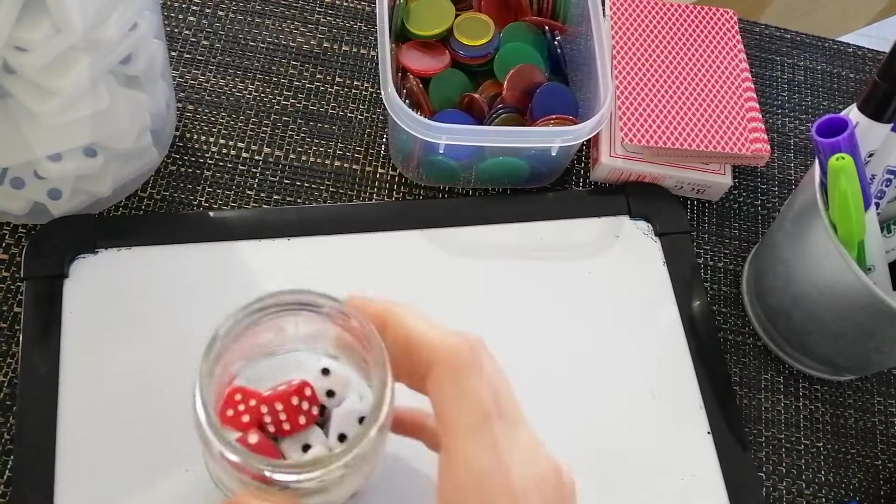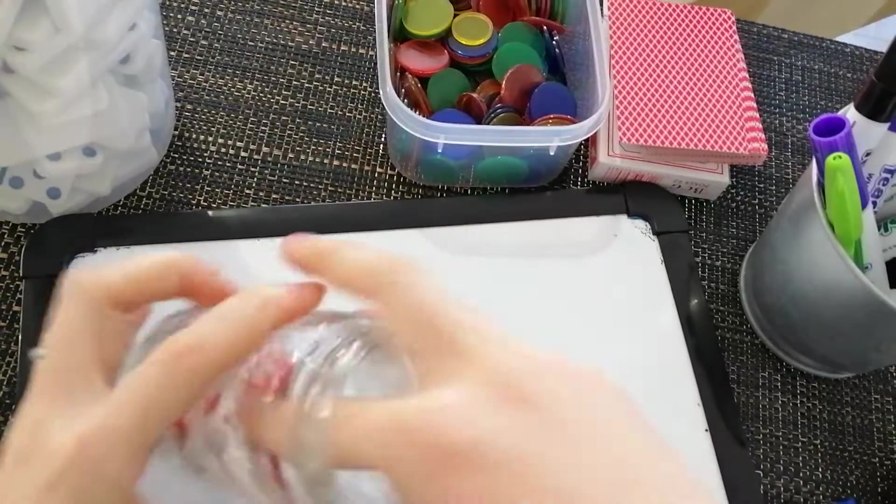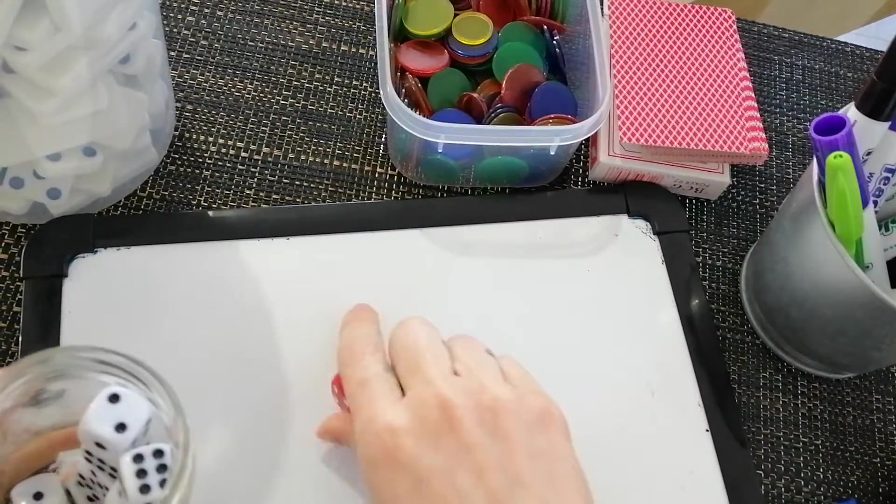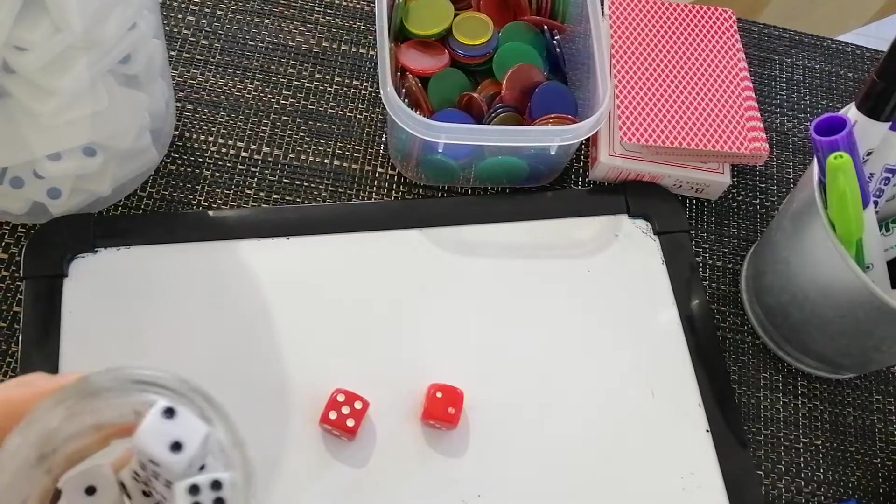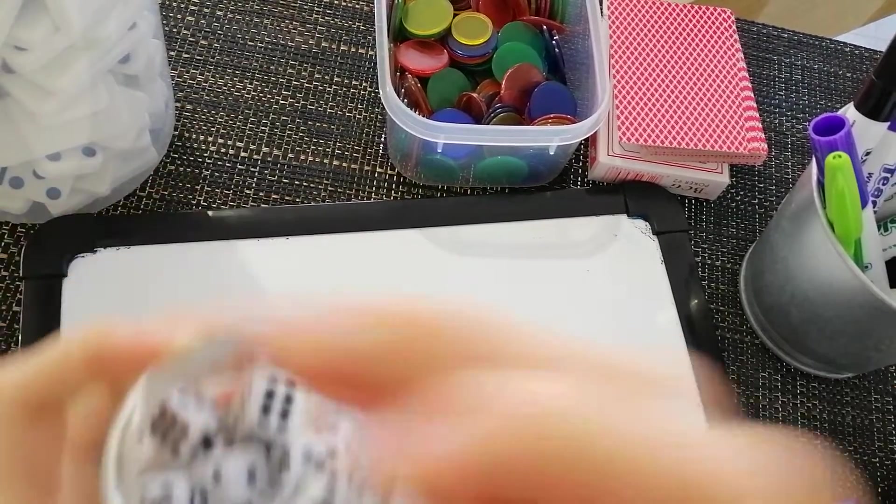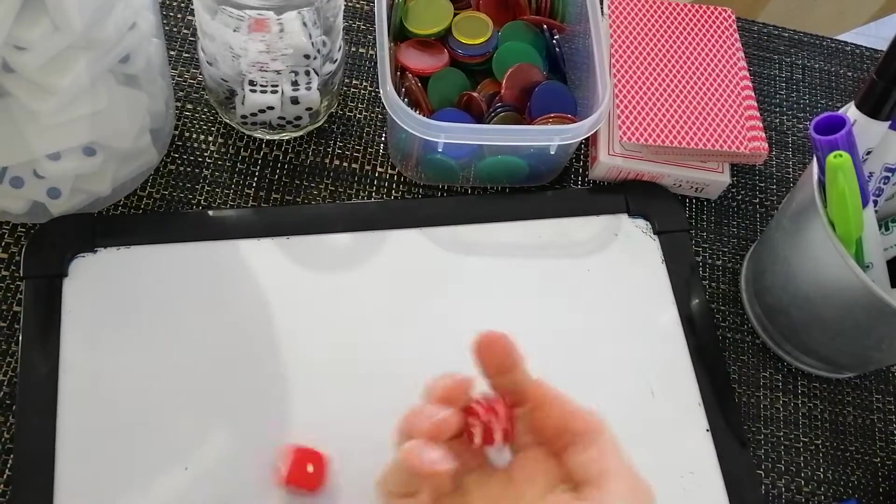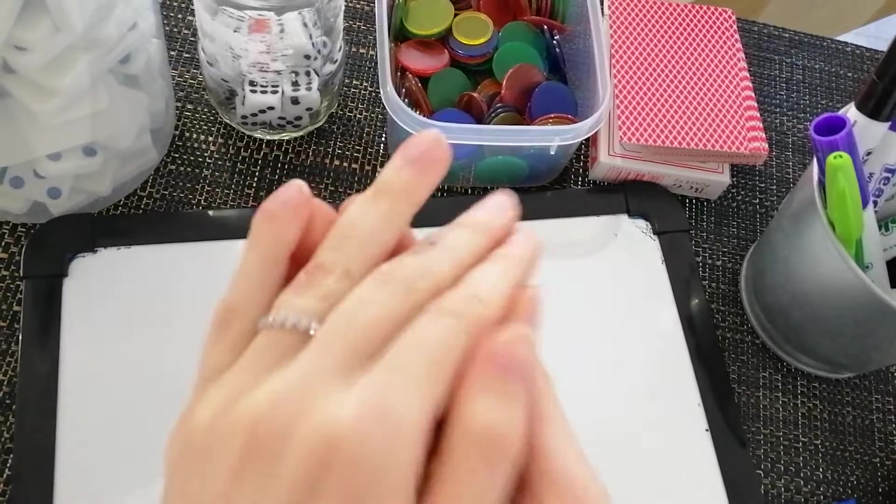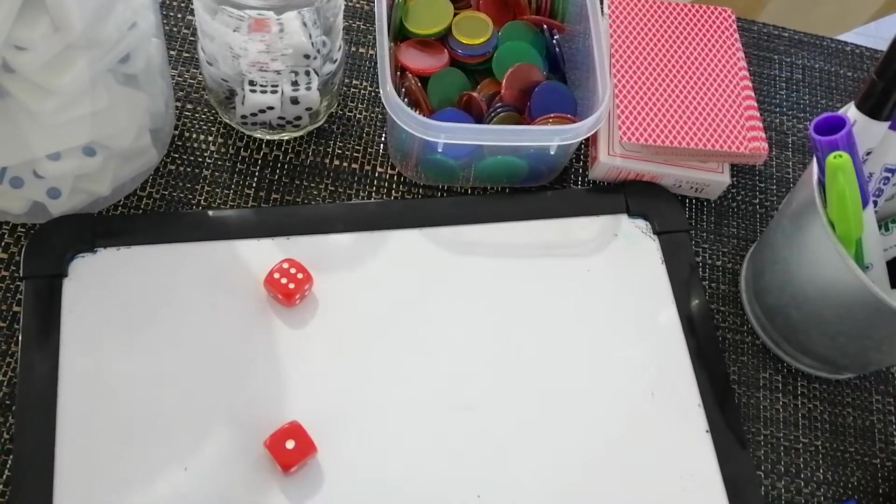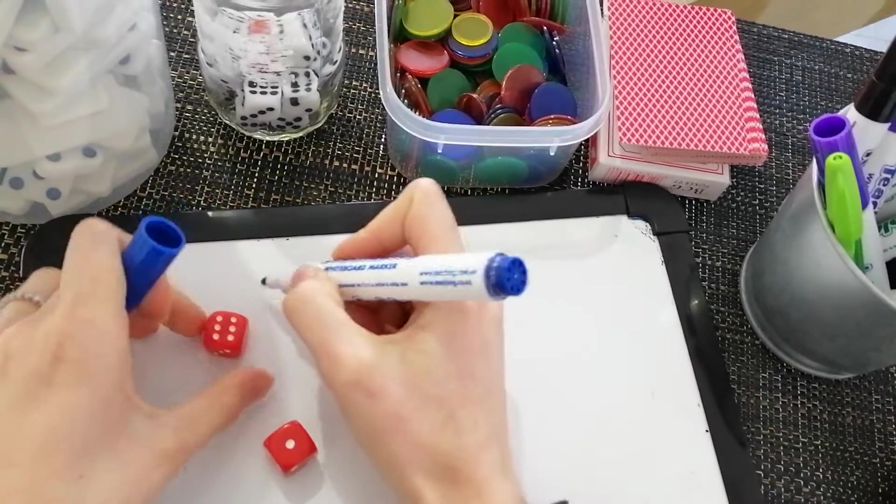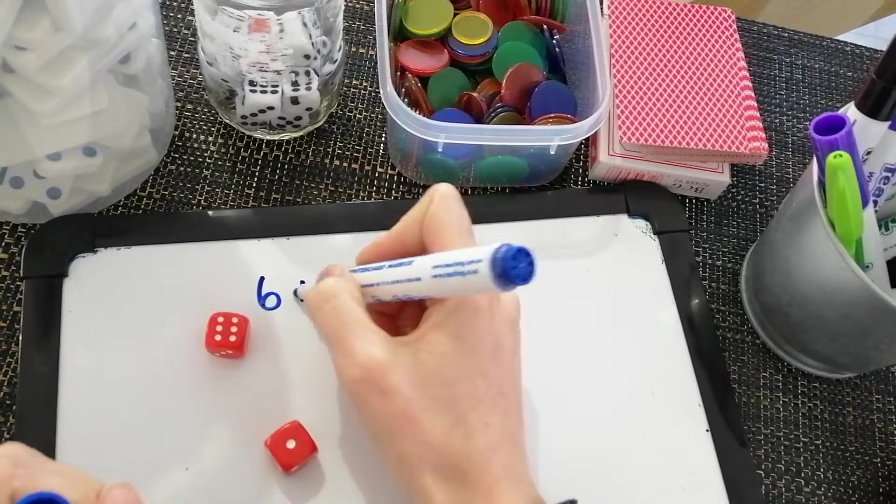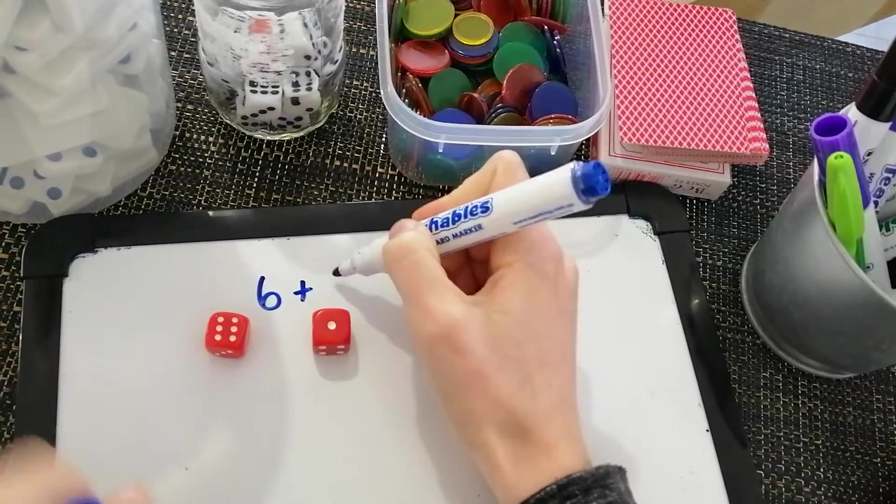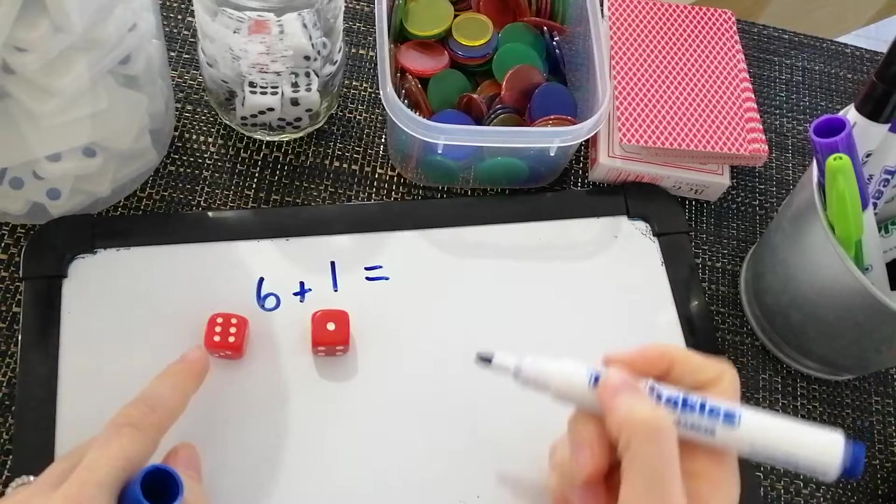Next I'm going to show you addition with dice. I'm going to start with two dice. And if I find that too easy, I can add some extras. Oops, that wasn't very good. Six.